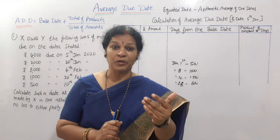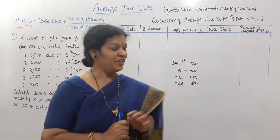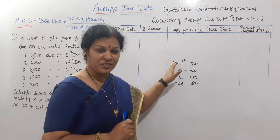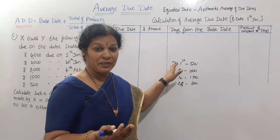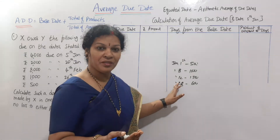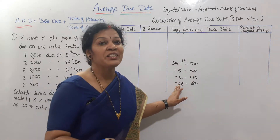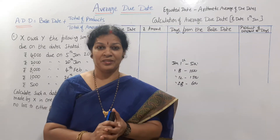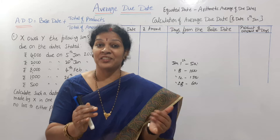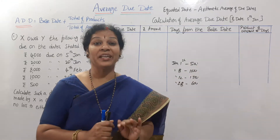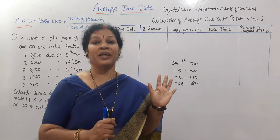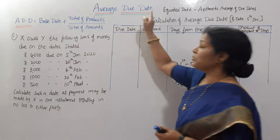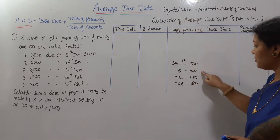He wanted to pay the total amount at a time, but on what date? If he makes payment on January 1st, the person making the payment feels it's a loss for him. And if he makes payment on the last date, it's a loss for the person receiving the amount. So we want to find a date which is comfortable — an average date out of these four dates. That average date we are going to calculate in this chapter. That is the reason we call it Average Due Date, also known as equated date — a balanced date.